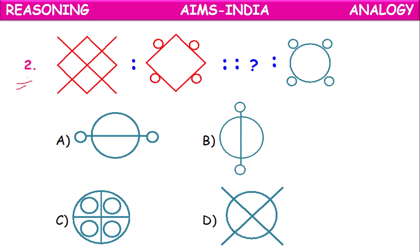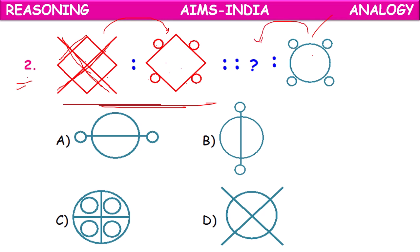Next question: A rhombus with two cross lines is the first object. In the second diagram of the first pair, the cross lines disappeared and four circles appeared. The fourth object is given with circles. So the third object should have cross marks, like the first object. Option D is the correct answer.